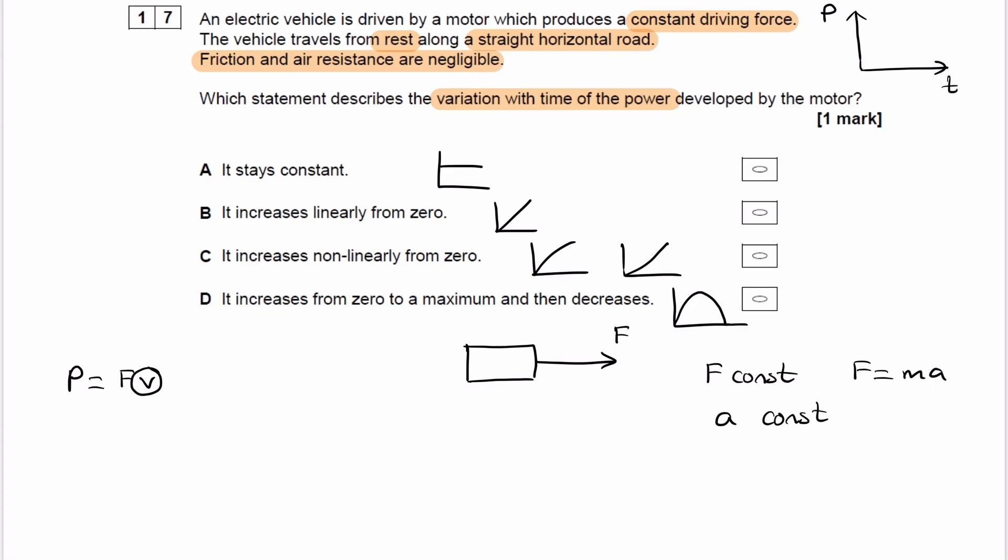If you have a constant acceleration, that means there is a constant increase in speed. We're told the vehicle travels from rest, so it starts at rest and then there's a constant acceleration, so the velocity will just continuously increase.